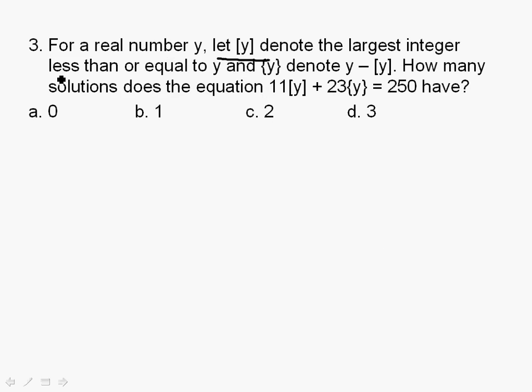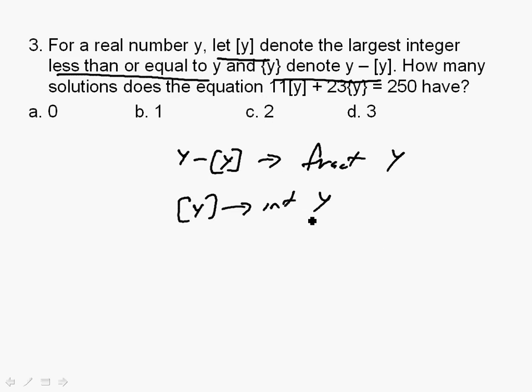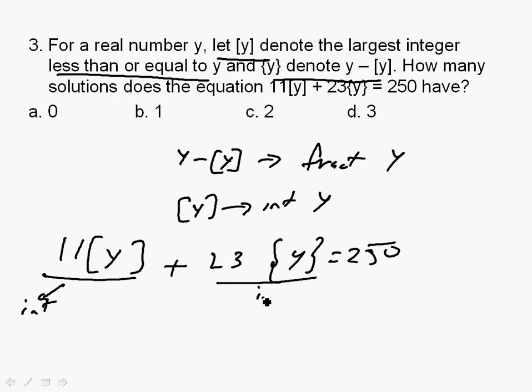Y is the largest integer less than or equal to Y. And {Y} denotes Y minus [Y]. That means Y minus [Y] is nothing but the fractional part of Y. And [Y] is nothing but the integer part of Y. If you look at the sum, 11[Y] plus 23{Y}. I can make out this will be an integer. To get the answer as an integer, this also should be an integer. This will only be an integer if it is divided by 23. Something upon 23 should give you an integer. So I know this numerator can be anything from 1 to 22.